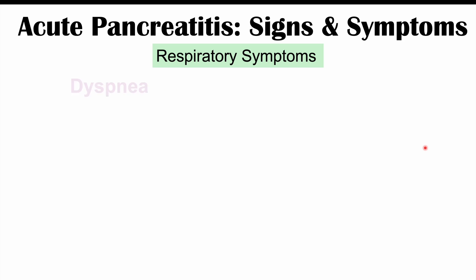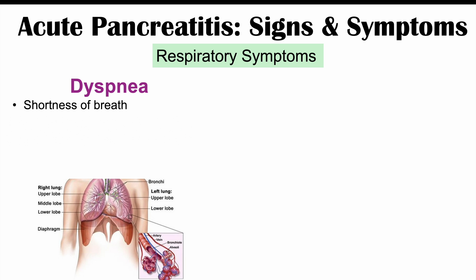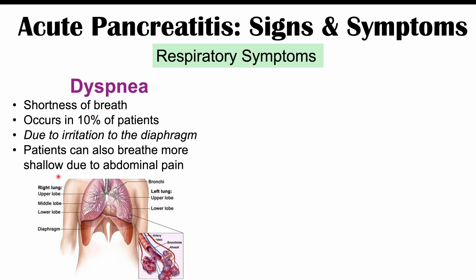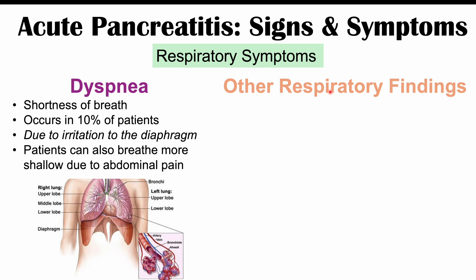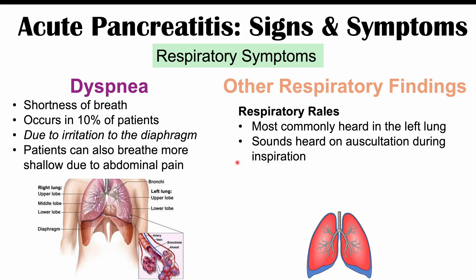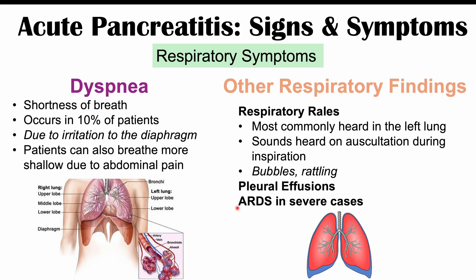Respiratory symptoms can occur in acute pancreatitis. Dyspnea — shortness of breath — occurs in about 10% of patients due to irritation of the diaphragm from pancreatic swelling. Patients may also breathe more shallowly due to abdominal pain. Respiratory rales, most commonly in the left lung, are sounds heard on auscultation during inspiration, often sounding like bubbles or rattling. Pleural effusions and, in very severe cases, acute respiratory distress syndrome can also occur.